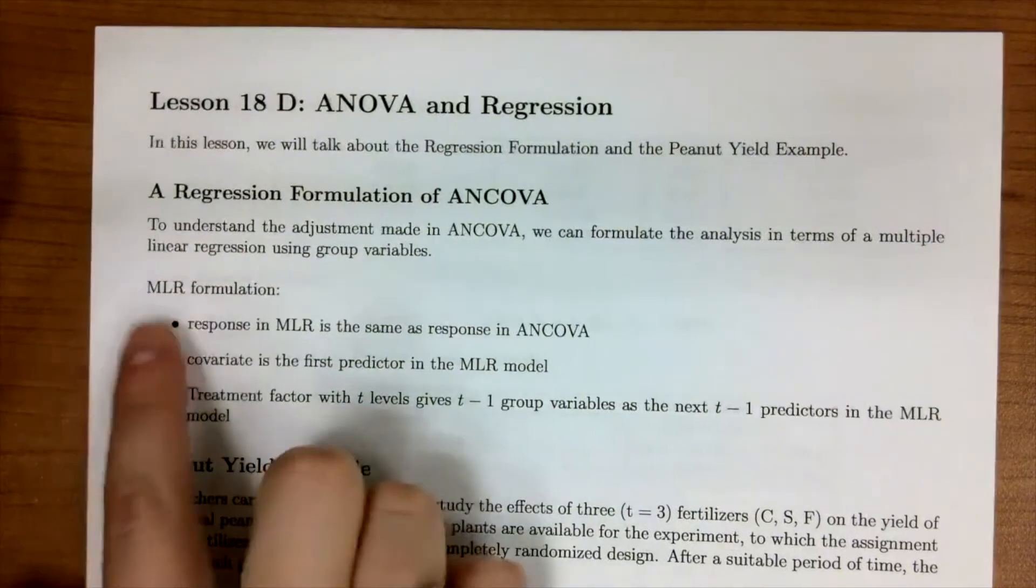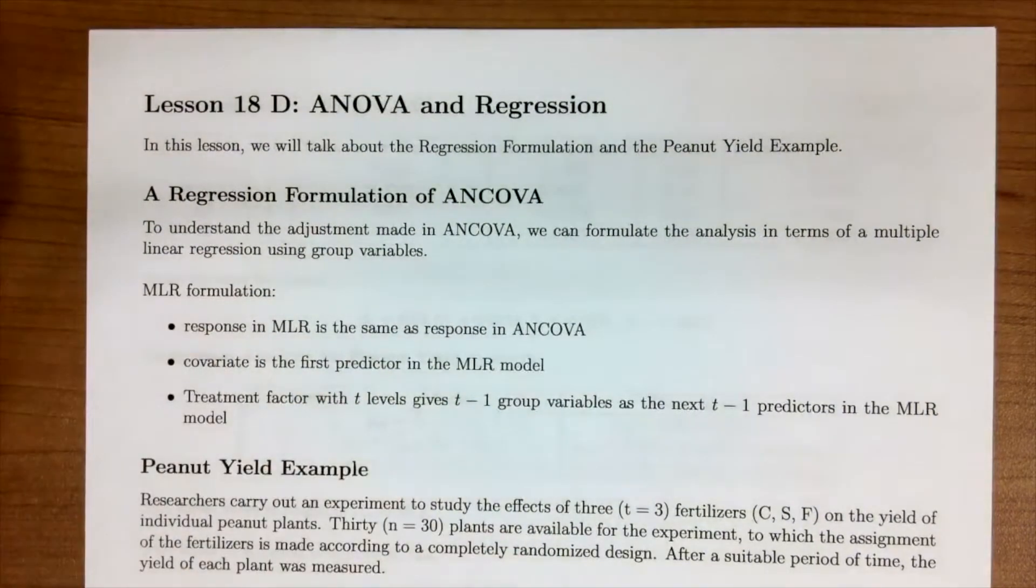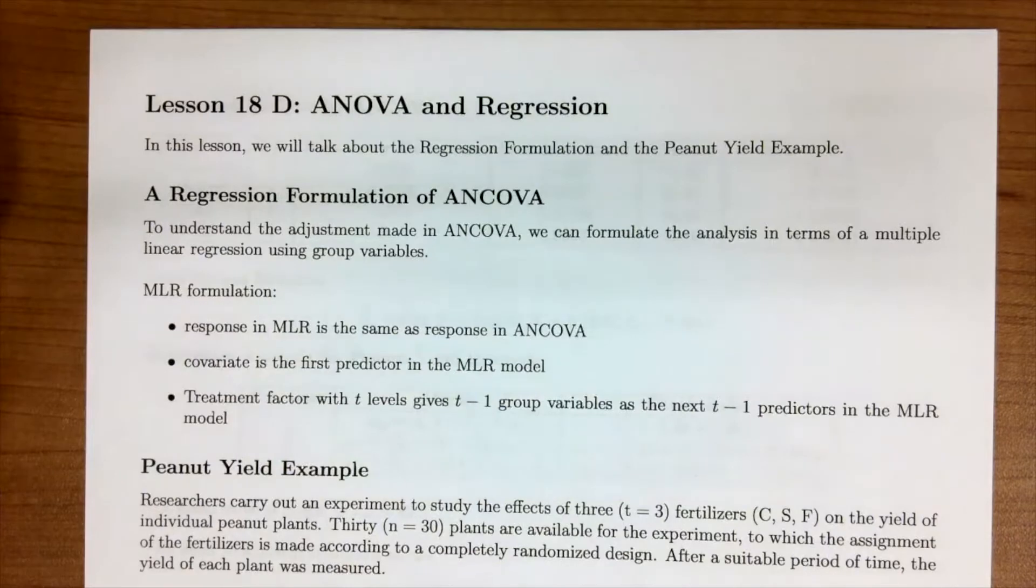So in the multiple linear regression formulation, the response in the multiple linear regression is the same as the response in ANCOVA. What I mean by that is the Y in our formula is the same. The covariate is the first predictor in the multiple linear regression model, so that's the beta 1 XIJ. And then our treatment factors with T levels is going to be represented with T minus 1 group variables or dummy variables as the next T minus 1 predictors in the multiple linear regression.